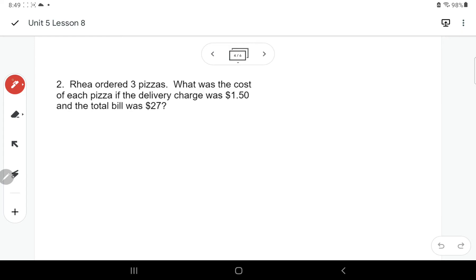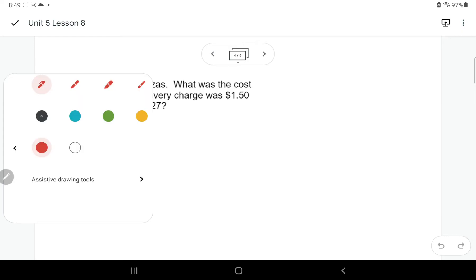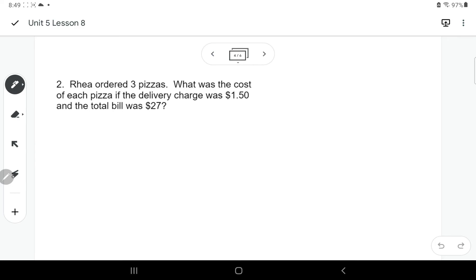Okay. So in our first example, we have somebody ordering pizzas. Rhea orders three pizzas. What's the cost of each pizza if the delivery charge was $1.50 and the total bill was $27? So if you wanted to figure out the total bill, we have three pizzas. So three times the price of each pizza plus the delivery charge equals 27.